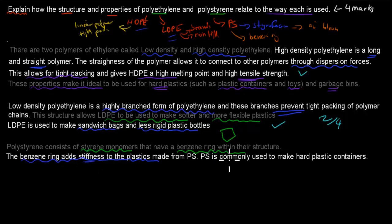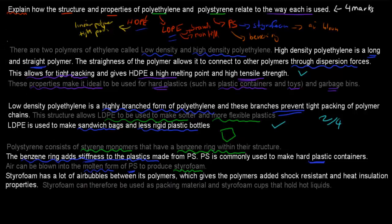PS or polystyrene is commonly used to make hard plastics because of that stiffness. I'll also quickly talk about styrofoam as well. Air can be blown into molten form of polystyrene to produce styrofoam. Styrofoam has a lot of air bubbles between its polymers. This gives the polymer added shock resistance and heat insulation properties. These are two other properties.